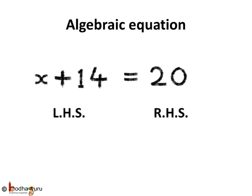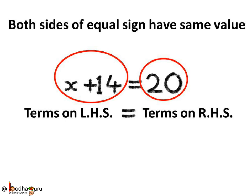In this equation, the expression on the left side of the equality sign is the left hand side, that is LHS in short, and the expression on the right side of the equality sign is the right hand side, RHS in short. In an equation, the values of expressions on the LHS and the RHS are equal.